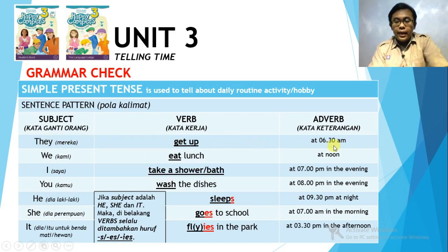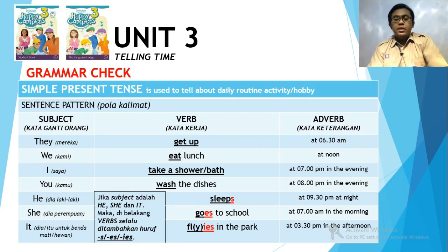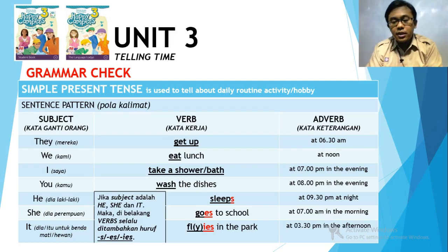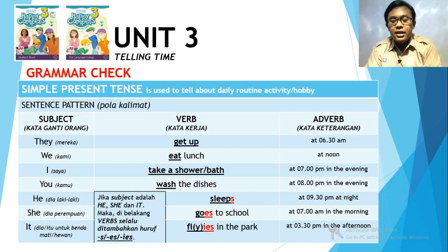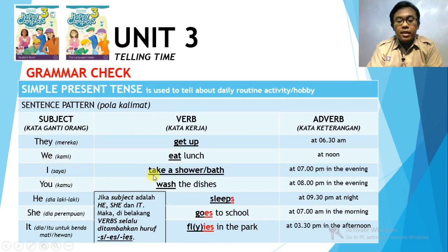For example, number one: 'They get up at half past six AM.' AM means in the morning. Then: 'We eat lunch at noon.' Noon is midday — around 12 o'clock — because lunch is mostly after 12. Next: 'I take a shower or take a bath at 7 PM in the evening.'